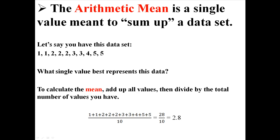To calculate the mean, first you add up all the values and then you divide by the total number of values that you have. We add together those 10 numbers and divide by 10. For this data set we find a mean of 2.8.